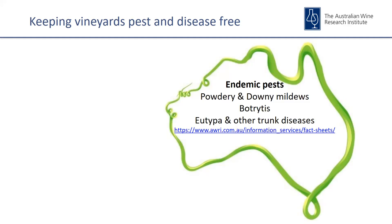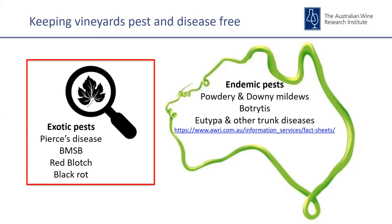I want to clarify a couple of terms. Endemic pests are those known to be present in Australia — things like powdery mildew, downy mildew, botrytis, Eutypa, and other trunk diseases. There's information on the AWRI website including fact sheets on these. Exotic pests are those not known to be present in Australia but known to exist in other countries and affect grapevine production. Examples include Pierce's disease, brown marmorated stink bug, red blotch associated virus, and black rot.